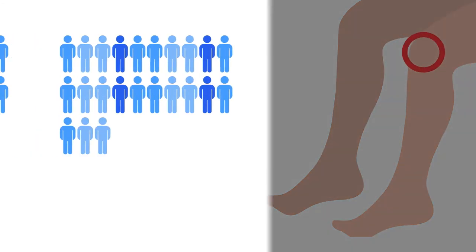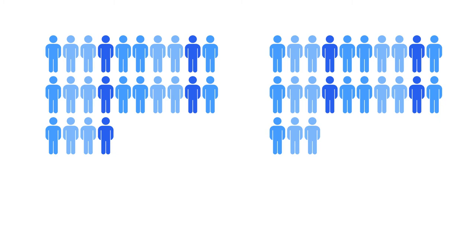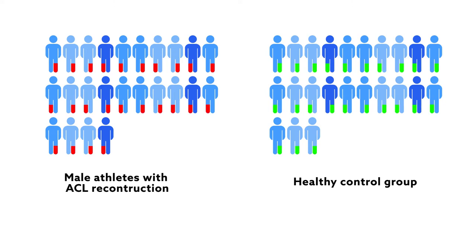The team compared 24 male athletes cleared to return to sport after ACL reconstruction with 23 healthy male controls. They used a combination of force plate measurements and 3D motion analysis to capture the athlete's performance on the triple hop test.